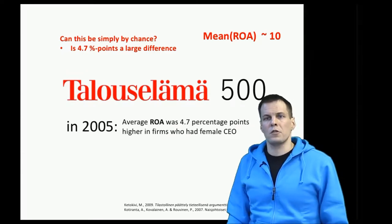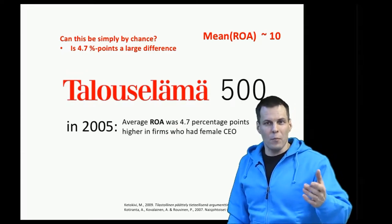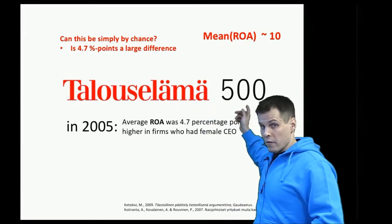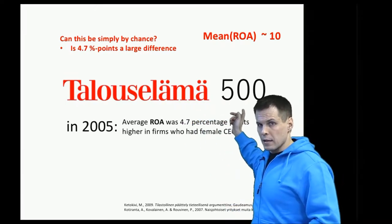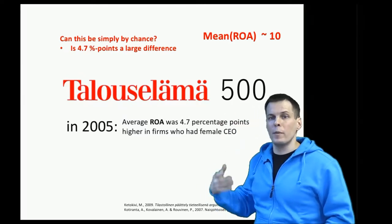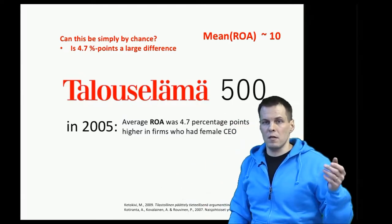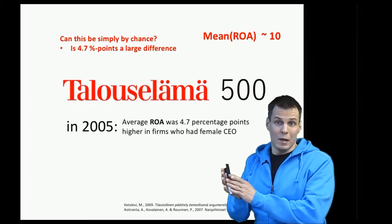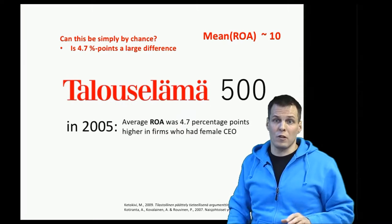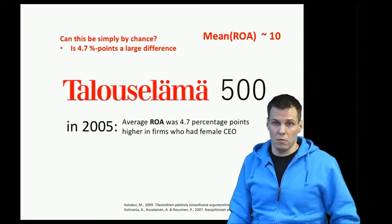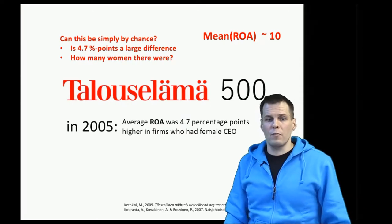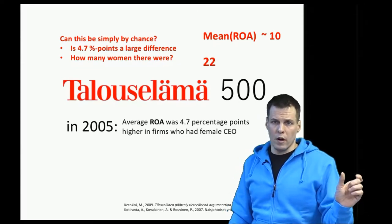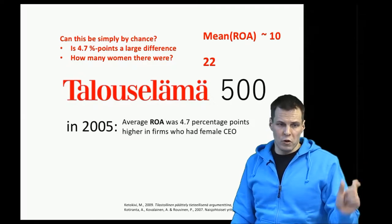The second important question relates to sample size. The full sample is 500 companies, but that's not the full story — we also have to consider how many women there are. If there are just five women versus 250 women, those two conditions would lead to very different conclusions. It happens to be that there were 22 women in the sample, which is a fairly small number of observations.